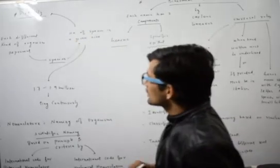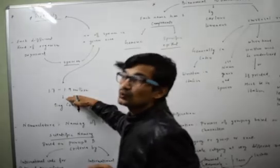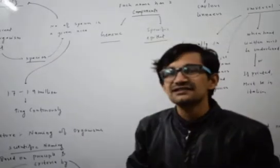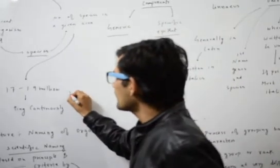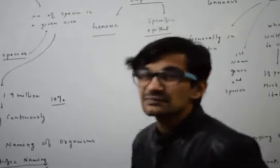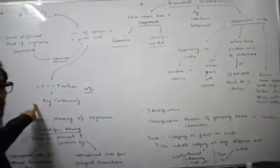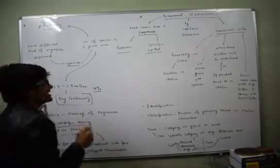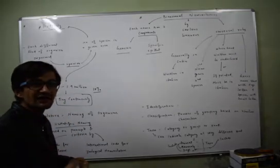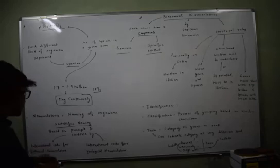In the present diversity, we have 1.7 to 1.9 million species on the Earth. An interesting fact is that some scientists and researchers say we have only found about 10% of life or species on Earth, and still 90% of species have yet to be recognized. This number is continuously increasing as we keep finding new species of bacteria and other living organisms.